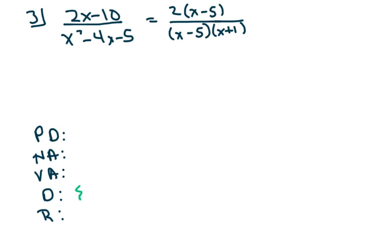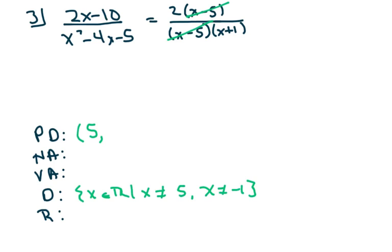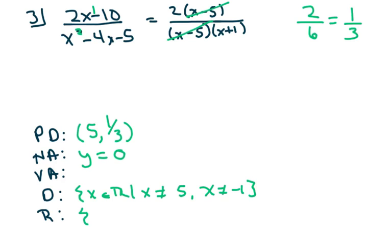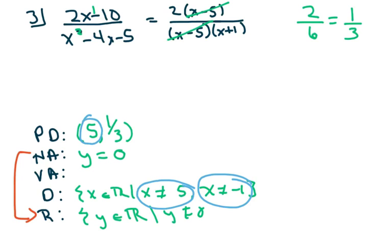Next one. The domain is all real numbers, but x cannot be five and x cannot be negative one. I do have a point of discontinuity because I can cancel these factors at x equals five. When I plug in five into the depressed equation, I get two over six, which is one-third — that's our point of discontinuity. The degree in the numerator is smaller than the degree in the denominator; any time that happens, the horizontal asymptote is y equals zero. That means the range is y cannot be zero. The vertical asymptote is x equals negative one, since x equals five went to the point of discontinuity.